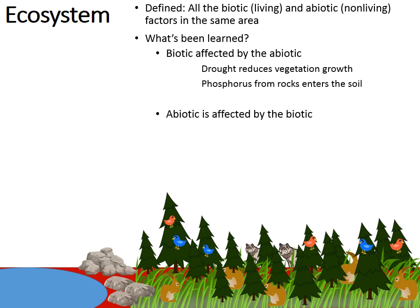It also works the other way — the non-living parts of the environment are affected by the living. The abiotic is affected by the biotic. A negative example is humans polluting non-living waterways. A positive example is living decomposers like bacteria and fungi enriching the non-living soil with nutrients. These are great examples of how abiotic factors are affected by biotic factors.